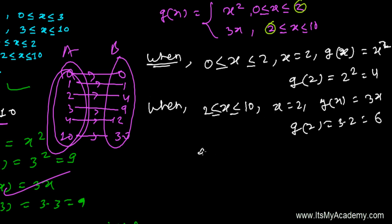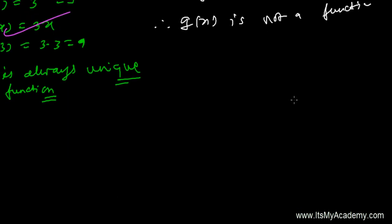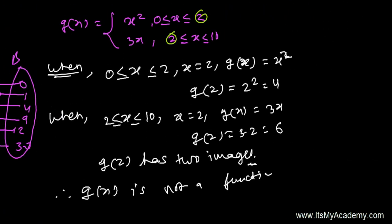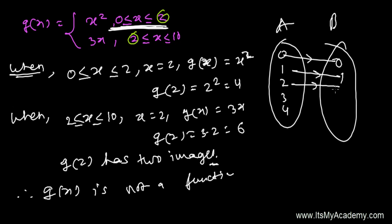So g(2) has two images: 4 and 6. The images are not unique, which means g(x) is not a function. If you draw a domain-codomain diagram, putting 2 into the domain gives two different arrows pointing to both 4 and 6 in the codomain — one object with two images, which is not allowed.